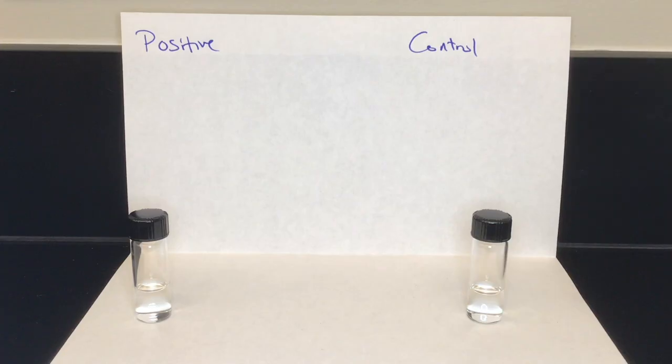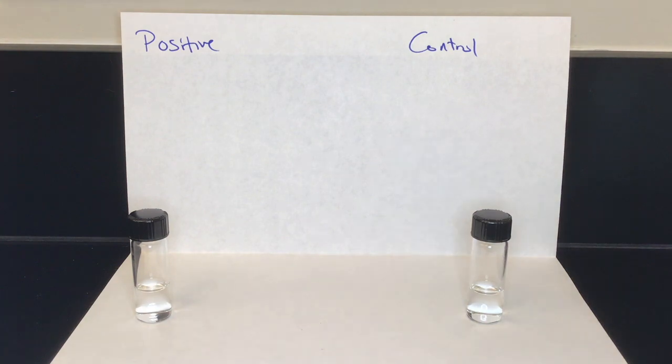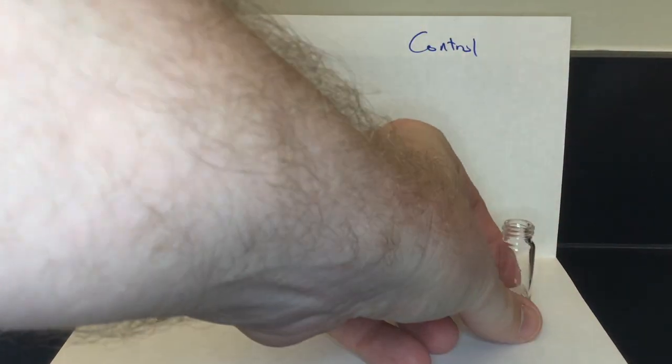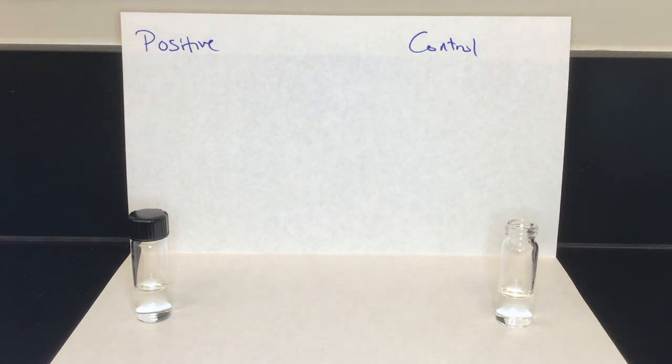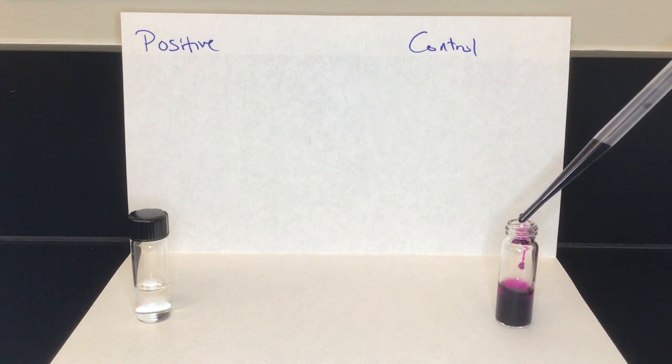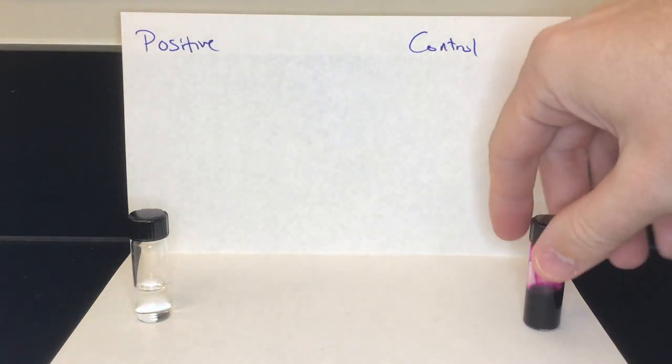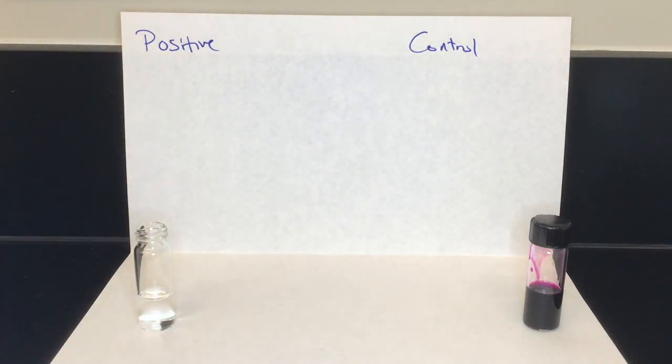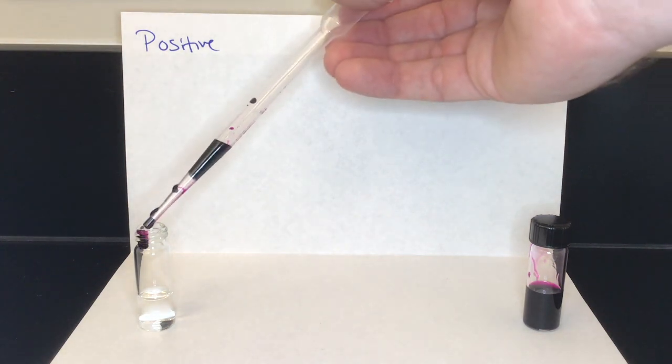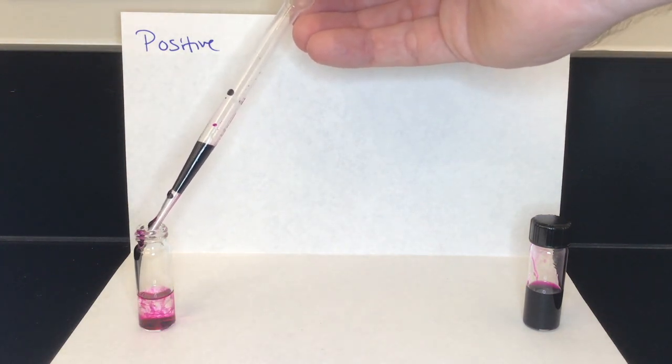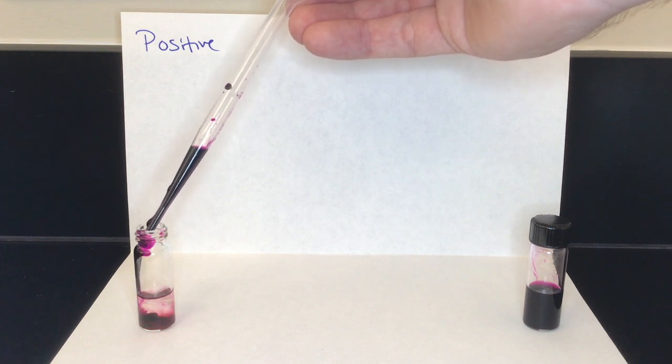This is the KMnO4 reaction. I've got the control that has just solvent in it, and I'm going to add the KMnO4 to that so you can see what that looks like. You can see it's going to turn purple because I have a purple solution that I'm adding. Nothing really happens there. Give this a shake. Now I have the positive control that has solvent plus an alkene, and we'll see what happens. You can see as I add it, it changes colors almost immediately. It turns like a brownish color as soon as I add it.